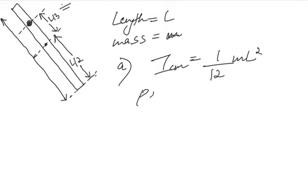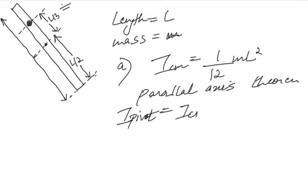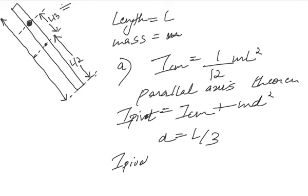So if we use parallel axis theorem, the moment of inertia of the pivot will be equal to I_CM plus M into D squared. Here D is equal to L by 3, so I_pivot will be equal to I_CM plus M times L by 3 squared.